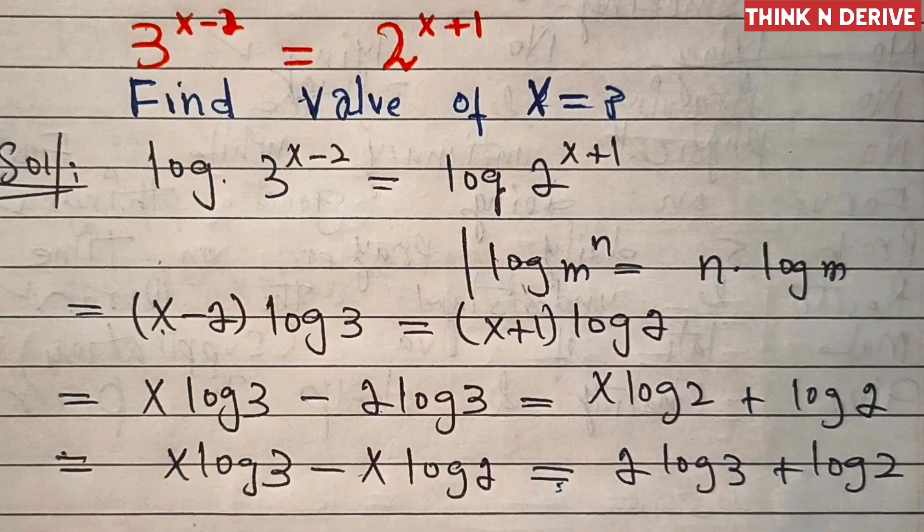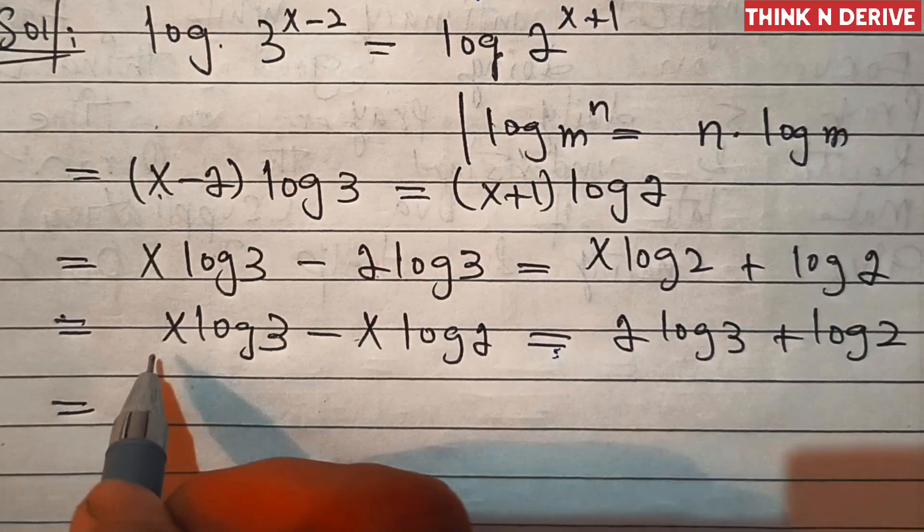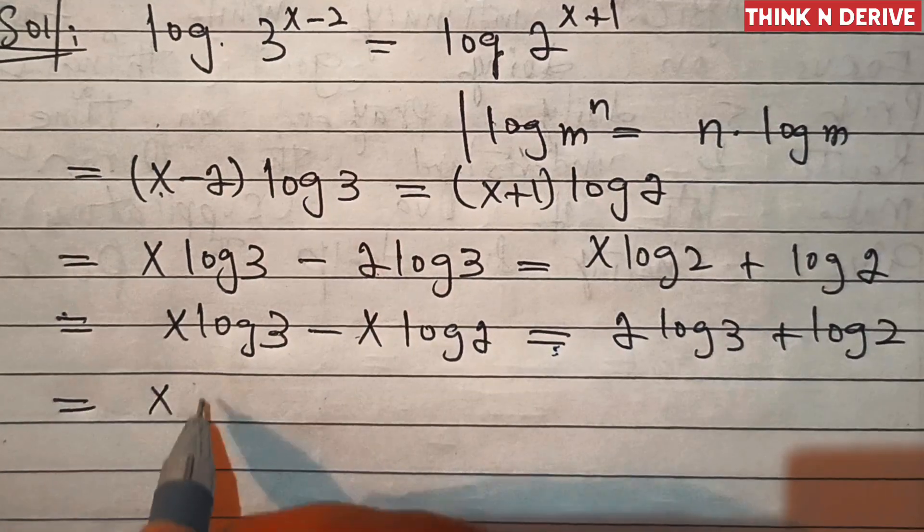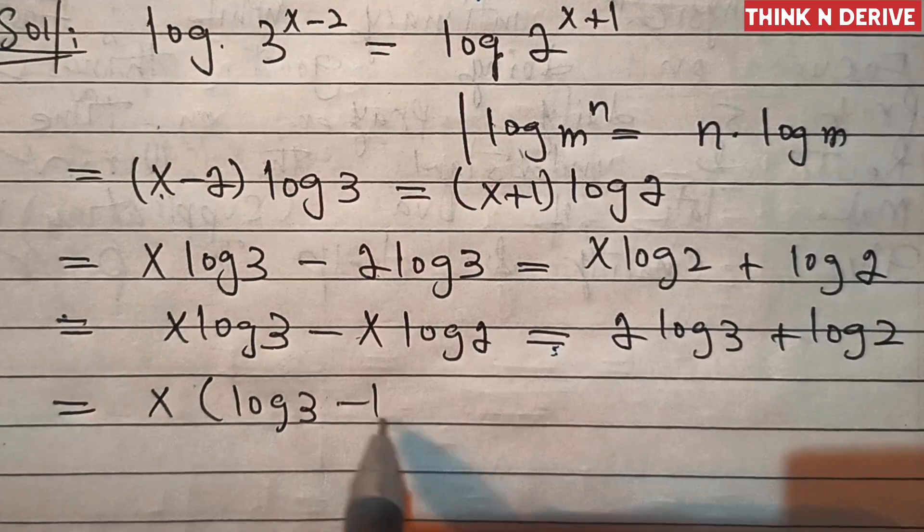This is equal to, now we'll take x common, so this is x log of 3 minus log of 2 equal to